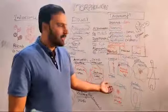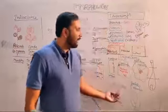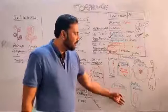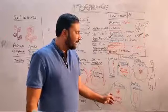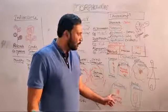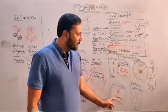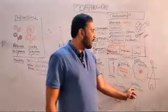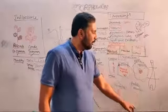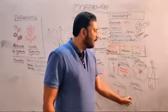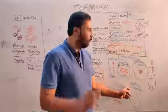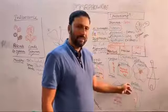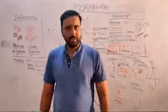Free central placentation — develops like axile placentation but at maturity the septa degenerate, so the multilocular ovary becomes unilocular — example Dianthus and Primrose. Basal placentation — ovules born from the base of the ovary; only one ovule develops from the base — example sunflower.